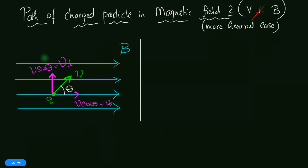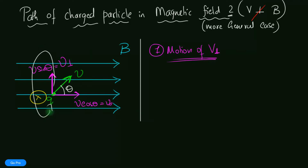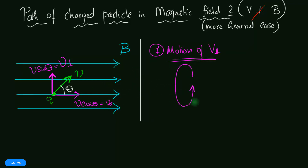Let's first consider the motion due to v perpendicular. This is the velocity component perpendicular to the magnetic field — something we discussed last time. Since the force acts inward, that's going to make the charged particle rotate in a circle. So due to the perpendicular component, the charged particle ends up rotating in a plane perpendicular to the magnetic field, and it continuously keeps moving like that.